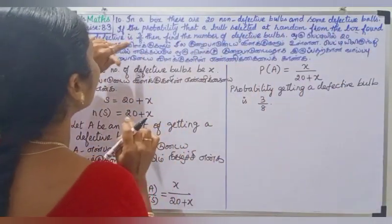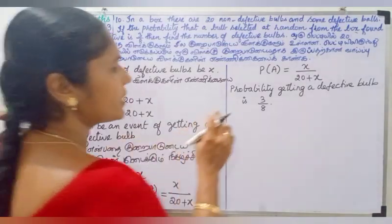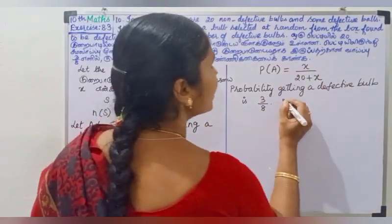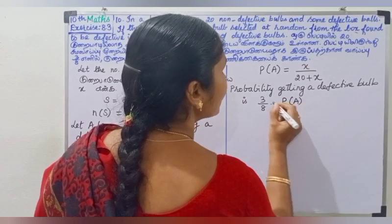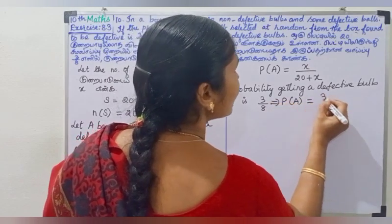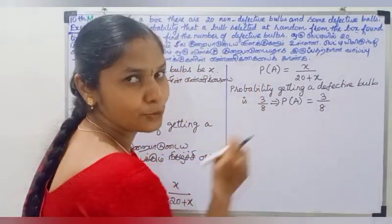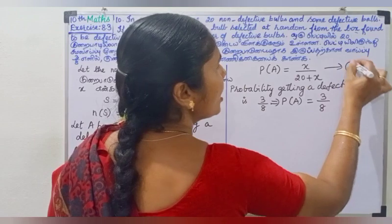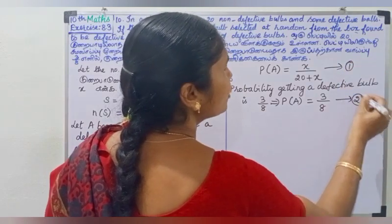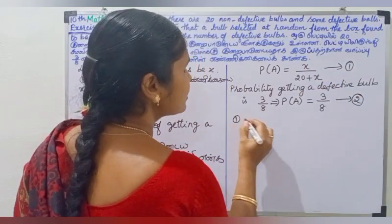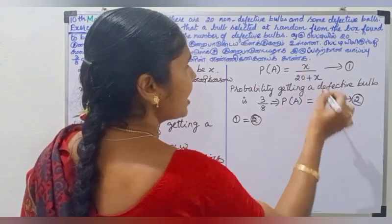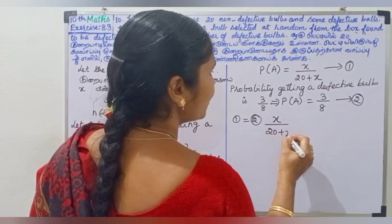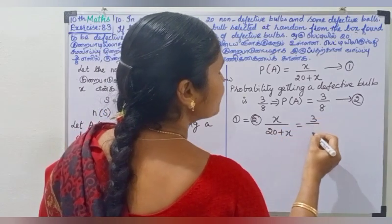The probability of getting a defective ball is 3 by 8. So P of A equals 3 by 8. We will equate these two values. So x by 20 plus x equals 3 by 8.